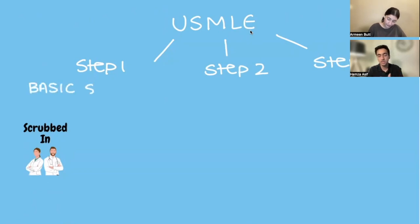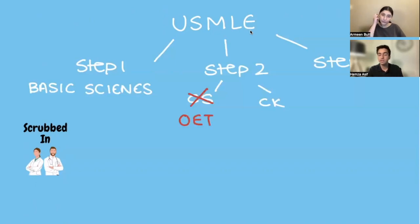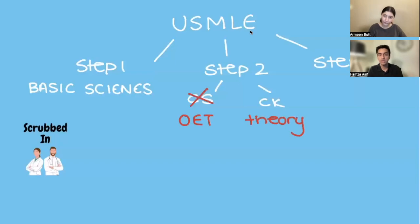Step 2 used to be divided into two further parts called Clinical Skills and Clinical Knowledge, which are CS and CK. But recently, the Clinical Skills component has become obsolete. In its place, there is now an OET exam, which is a language test, and passing this becomes the replacement for your Clinical Skills exam. The Clinical Knowledge exam is a theoretical exam which is your application of basic sciences — what you study in the final year.